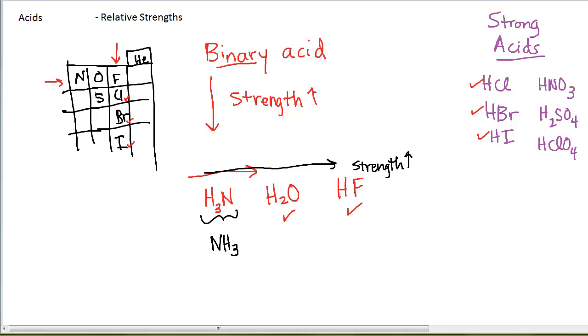We also can see that trend in this next row, H2S and HCl. As I move from left to right, H2S is a weak acid, HCl is actually a strong acid. So binary acid strength, we have a trend in both the groups, the columns, as well as the periods or the rows.